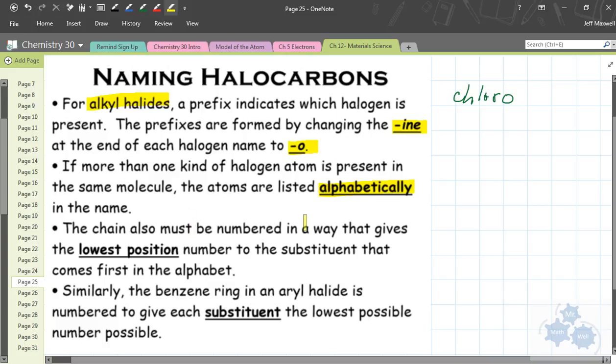The chain also must be numbered in a way that gives the lowest position number to the substituent that comes first in the alphabet. So the carbon chain has to be numbered with the lowest number for the first element.